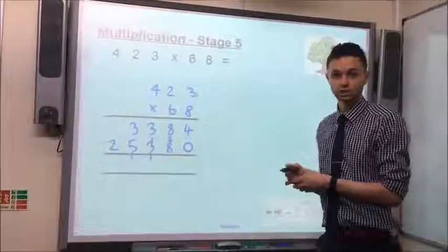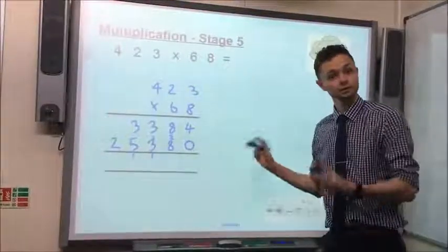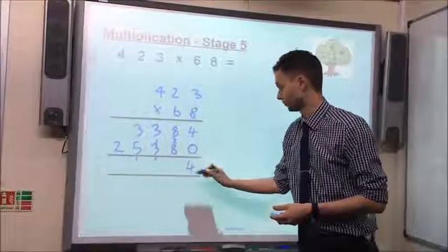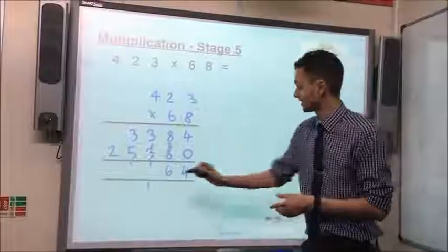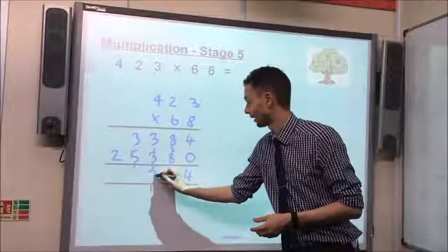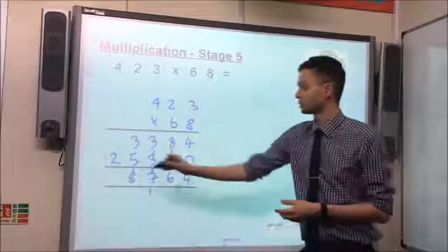Now we've got the two stages of the calculation. We can add them together to get our answer. So 4 add 0 is 4. 8 add 8 is 16. 3 add 3 is 6. Add the 1 we've carried over, makes 7. 3 add 5 is 8. Add 2,